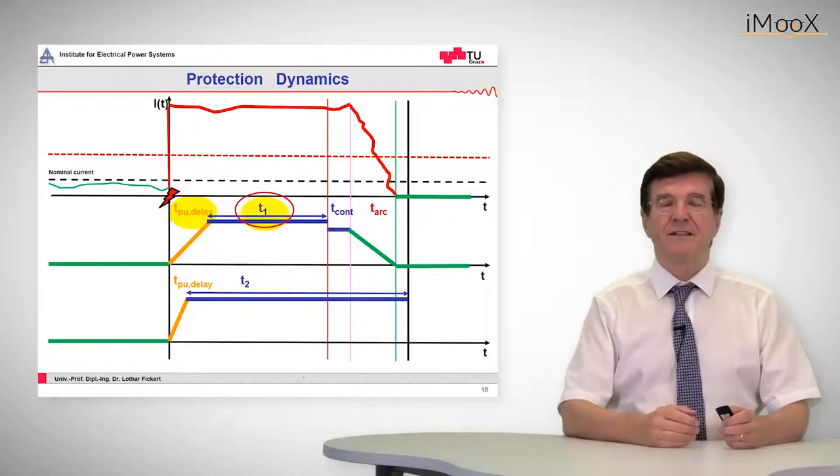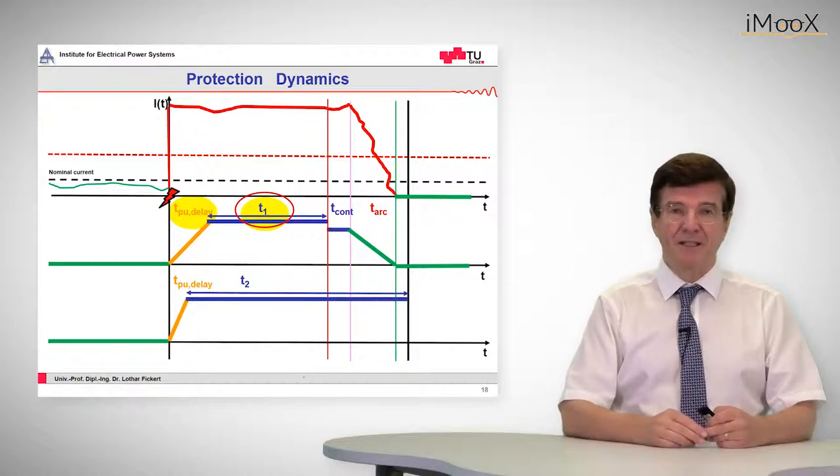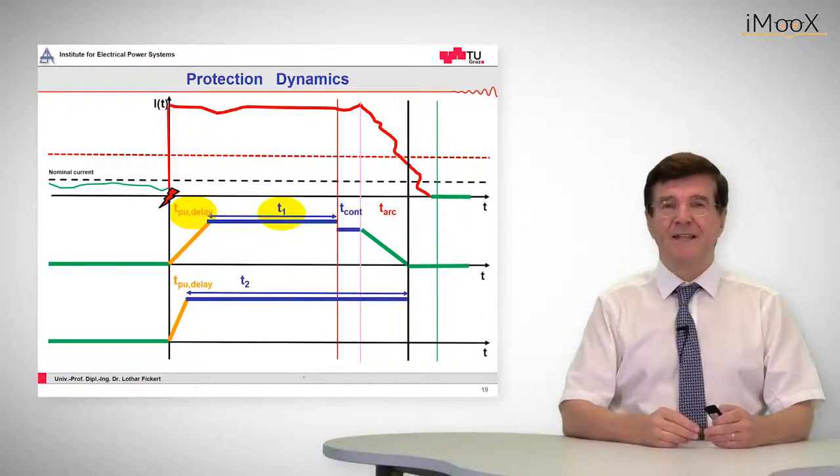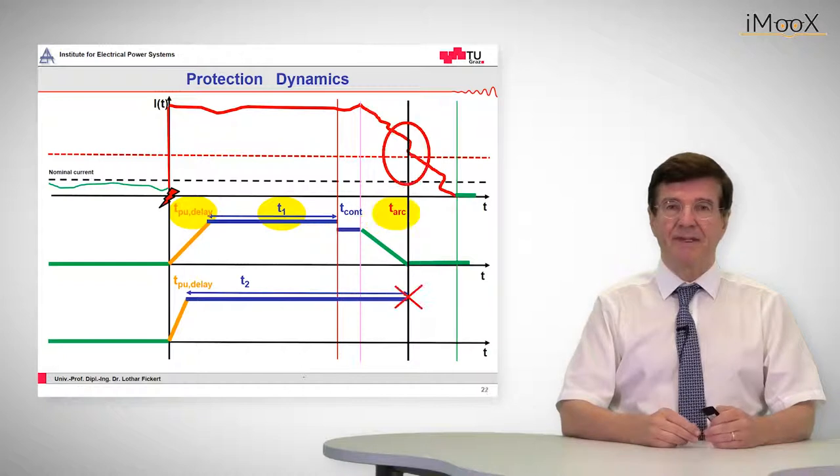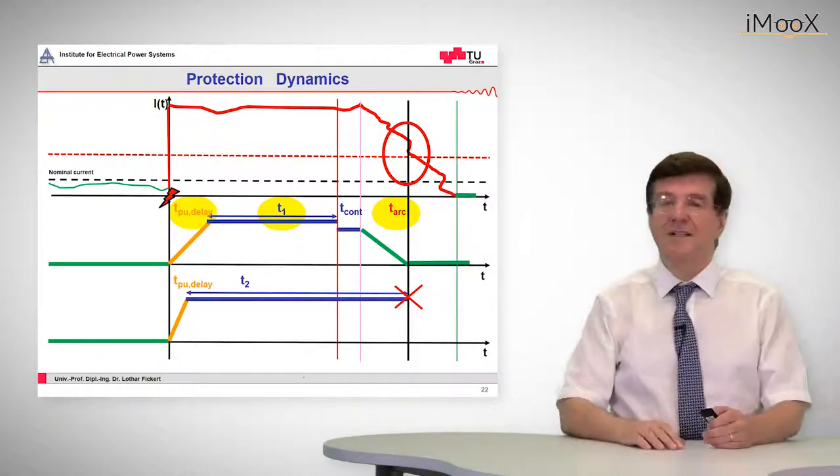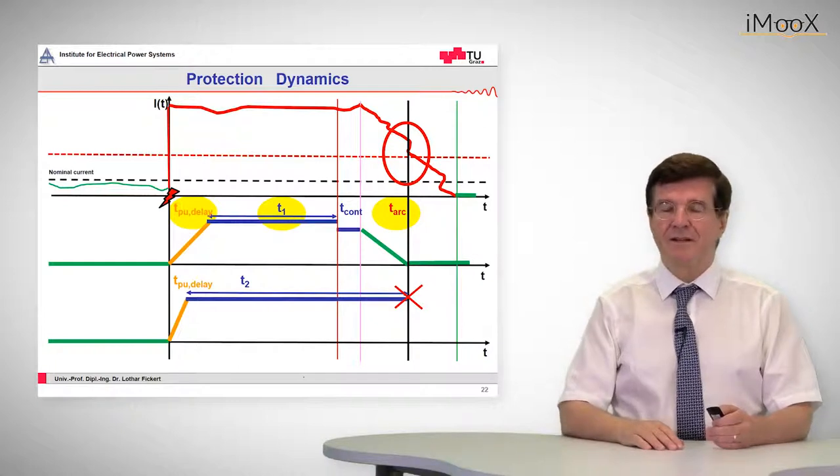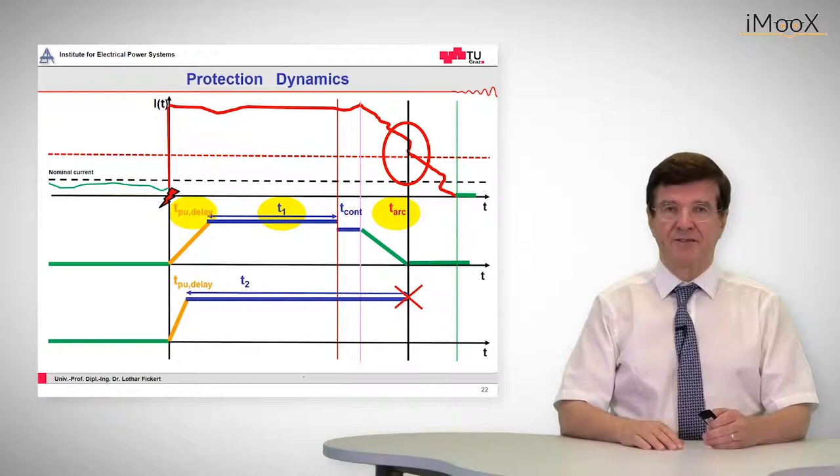Also the retarding time, the grading time may be increased and that means that again the whole procedure lasts longer and also the contactor and the arcing time may increase. And that will lead, as is indicated in the red circle, to an overlap with the intended tripping time of the upstream relay T2.